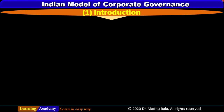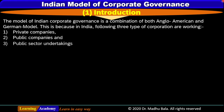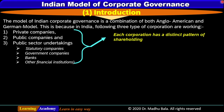Let's have a brief overview and introduction about the Indian Model. The Indian Model of Corporate Governance is a combination of both the Anglo-American and German Model. This is because in India three types of corporations are working: private companies, public companies, and public sector undertakings. Public sector undertakings may be statutory companies, government companies, banks, and other financial institutions. Each type of corporation has a distinct or different pattern of shareholding due to their composition.